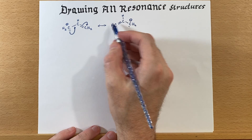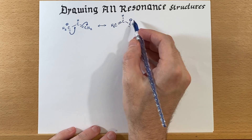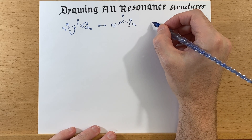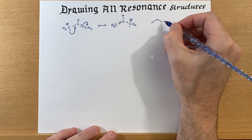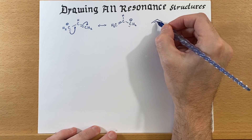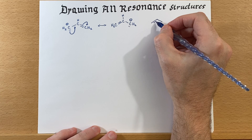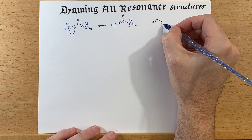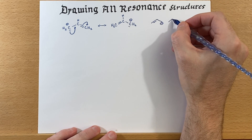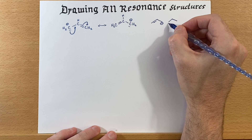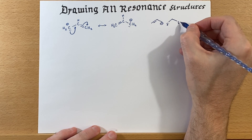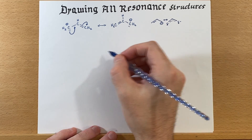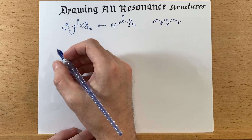So there's a resonance structure where we can move the double bond and the negative charge. It ends up being a hybrid — let's draw that hybrid: partial negative, partial negative, like so. It really looks kind of like that.